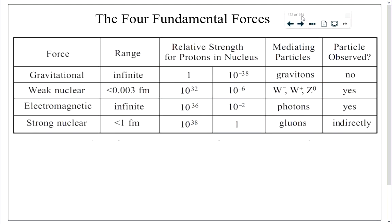You're expected to know the four fundamental forces: gravitational, weak nuclear, electromagnetic, and strong nuclear — and their order in terms of strength. Assigning gravity a strength of 1, the weak nuclear force is 10³² times greater, the electromagnetic force is 10³⁶ times greater, and the strong nuclear force — the nuclear glue holding nucleons together — is 10³⁸ times greater. You're also expected to know the range over which these forces act and the mediating particles in the standard model that produce them. Note that the graviton, the hypothesized mediating particle for gravity, has not been detected.